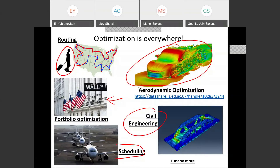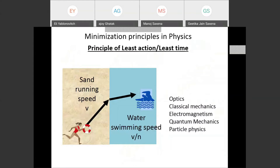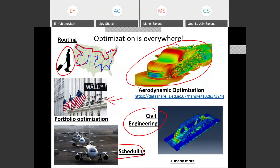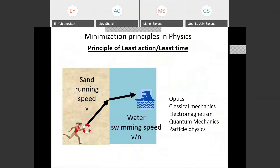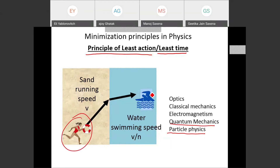The real question the professor wants to address is: yes, there is mathematics that is pretty good for optimization, but physics does optimization all the time — why don't we use physics to do the optimization? A very famous principle in physics called the principle of least action — usually not covered in elementary physics — says the light ray tries to follow a path that takes the shortest time.